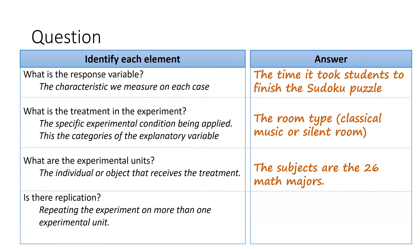Replication is really important because we want to validate results and make sure what we're seeing isn't just happening by chance. We need more than one experimental unit in each treatment group. In this example, there is replication: 13 math majors listen to classical music and 13 listen to nothing. In this course, replication refers to having more than one experimental unit in each treatment group, though it can also mean repeating the entire experiment in a different time or location.